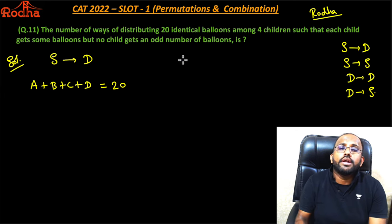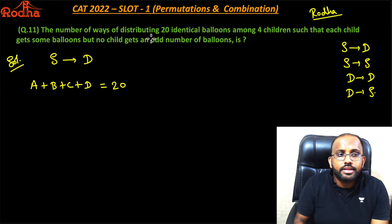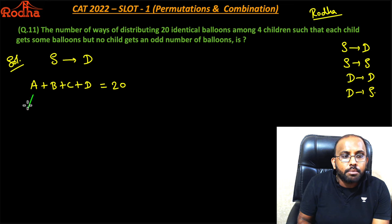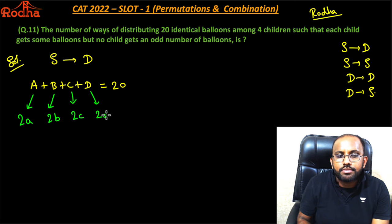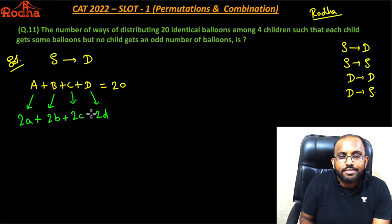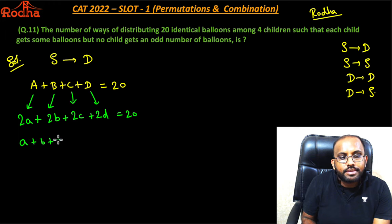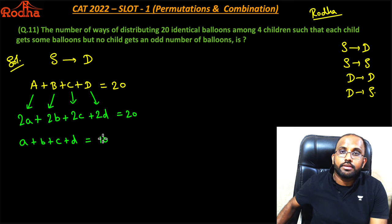All are getting at least one balloon and an even number of balloons. To enforce this, I replace A with 2a, B with 2b, C with 2c, and D with 2d. So 2a + 2b + 2c + 2d = 20, which gives a + b + c + d = 10.